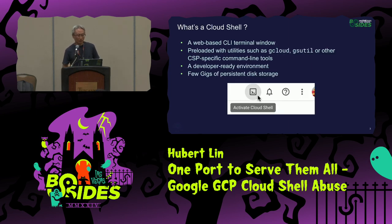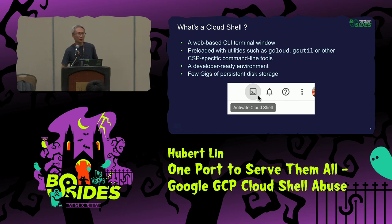So what is the Cloud Shell? Cloud Shell is basically a web-based interface, a command line interface that can be used by end users to manage their cloud resources, or even develop their small apps from their web shell. Cloud Shell is also preloaded with a lot of utilities, especially those cloud-specific utilities from different Cloud Shell providers. For Google, we have GCloud and gsutil pre-installed, so you don't have to worry about tool installation. They also have programming languages pre-installed, so you can have your preferred language ready for development or testing.